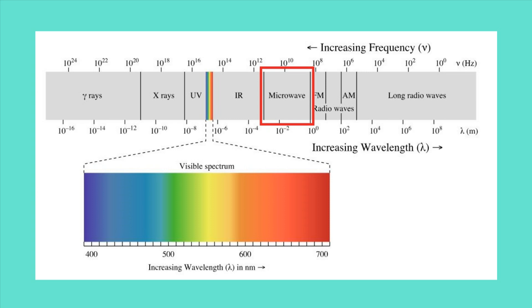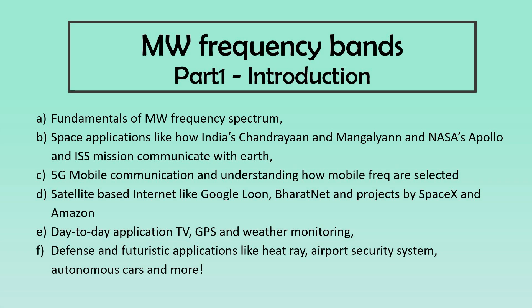For the sake of completeness, I am making this video about all frequency bands in the microwave spectrum — that is between 0.3 and 300 GHz frequency — and their applications. Since it would be too long for one video, I am making it in multiple parts covering: fundamentals of microwave frequency spectrum; space applications like how India's Chandrayaan and Mangalyaan and NASA's Apollo and the International Space Station communicate with Earth; 5G mobile communication and how mobile frequencies are selected; satellite-based internet like Google Loon, Bharatnet, and projects by SpaceX and Amazon; day-to-day applications like TV, navigation and positioning systems, and weather monitoring; and finally advanced applications like heat rays, airport security systems, autonomous cars, and more.